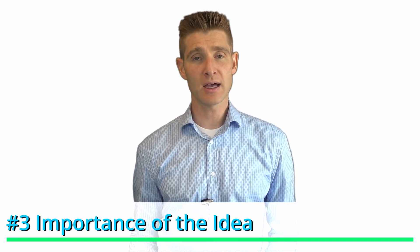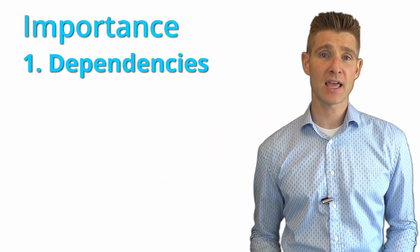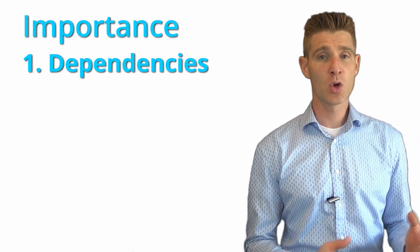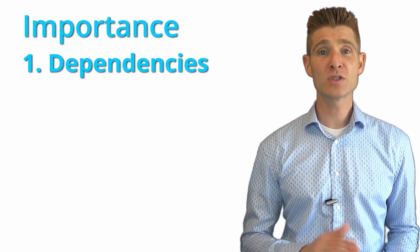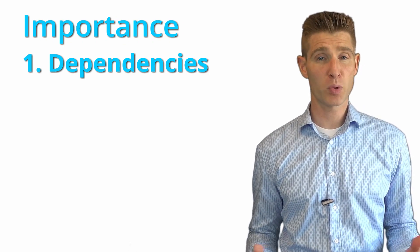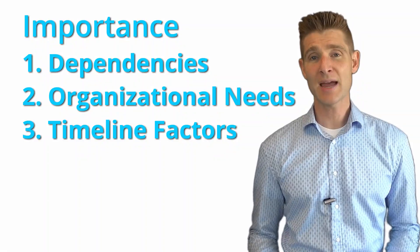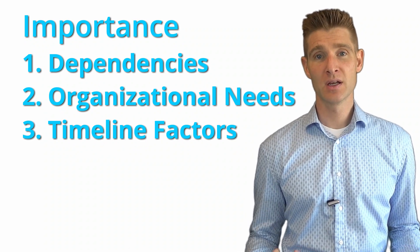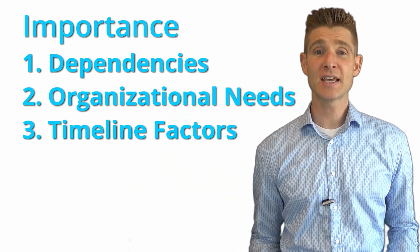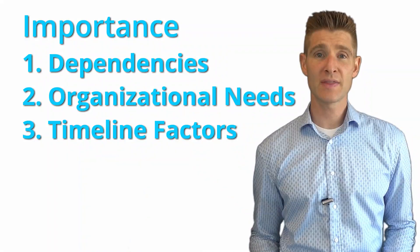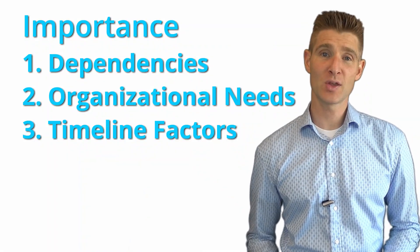The third thing you should look at when prioritizing your test ideas is the importance of the idea itself. There may be some tests that have dependencies — for example, you may have a really valuable test you want to run, but you can't run it until you learn something else, or it's part of a process or flow. Those test ideas with dependencies become more important because they have to run first. Another part of evaluating importance is organizational and timing needs. For example, if we have a Mother's Day campaign coming up and want to test creative and content for it, that test becomes more important due to the timing constraints we have to work within.